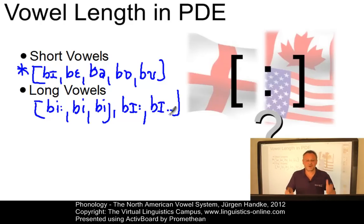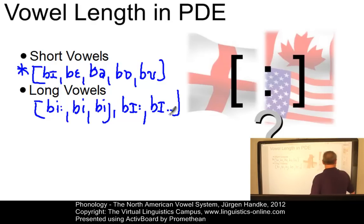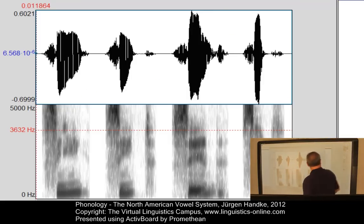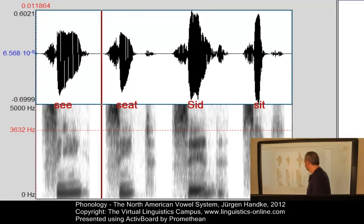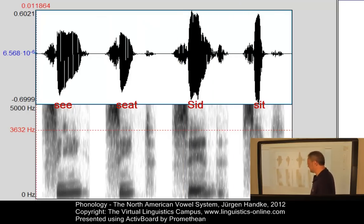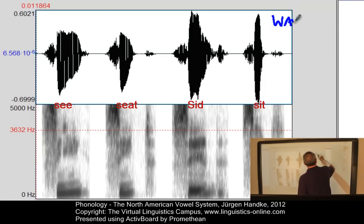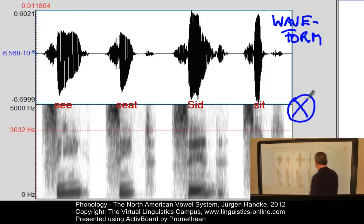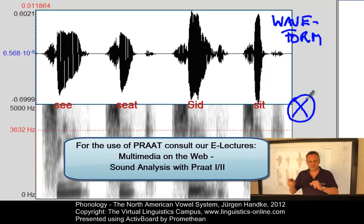Is there any justification for this long-short distinction of present-day English vowels? The following samples I have recorded will tell us that acoustically there is no justification. Let's look at my recordings. Here you find four words: 'see,' 'seat,' 'said,' 'sit.' The presentation shows the waveform view and, at the bottom, the spectrographic representation. The program used here is Praat. You can find e-lectures about the use of this program on our YouTube video channel.